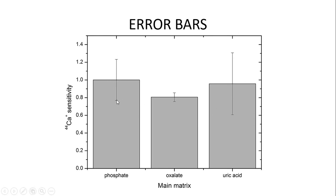For phosphate the spread of error is roughly between about 0.75 and 1.25. The spread of error for oxalate is a lot smaller — looks like it's hovering between about 0.75 and 0.85. And then uric acid over here has a range that's a lot larger.